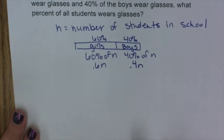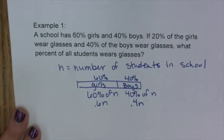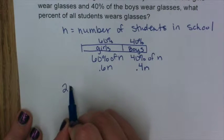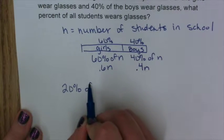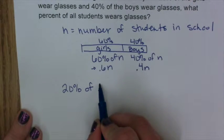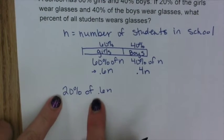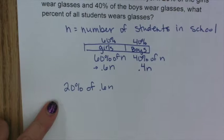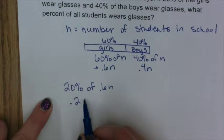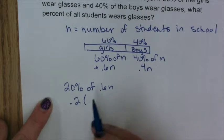Of this 60% of the school who are girls, 20% of them wear glasses. So we write 20% of the girls, which we're representing as 0.6N. We change 20% to a decimal — 'of' means to multiply — so we get 0.2 times 0.6N.